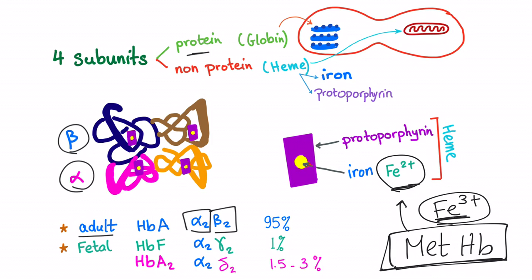So here are two alpha subunits and two beta subunits. And inside them, we have the heme group, protoporphyrin and iron in the center. Four of them.